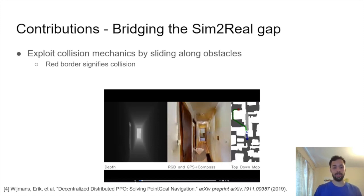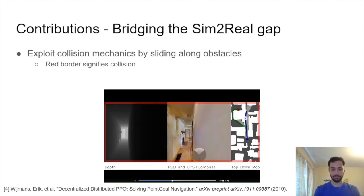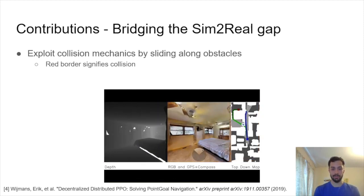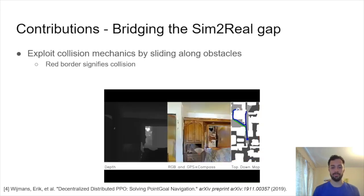Let's start with collision exploitation. This is where agents will exploit collision mechanics by sliding along obstacles. Here I have a video from Facebook's paper called Solving Point Goal Navigation. In this case we're going to see the agent navigate to the goal, and each time the agent collides with the wall, you'll see a red border appear around the frame. You can see here it's sliding along the wall, slides along the wall again, slides along the bed, and finally reaches the goal. So you can see there's a lot of collision exploitation from these agents.